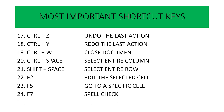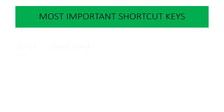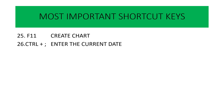F7 — spelling mistake हमने की है पूरे document में तो उसको सुधारने के लिए F7 का use कर सकते हैं. यह exam में बार-बार पूछा जाता है कि spelling check करने के लिए कौन सी shortcut key use करते हैं — answer है F7. F11 — Excel के अंदर कोई chart create करना चाहते हैं तो F11 का use करें. Ctrl + Semicolon — आज की date को Excel में enter करने के लिए Ctrl + Semicolon का use करते हैं.